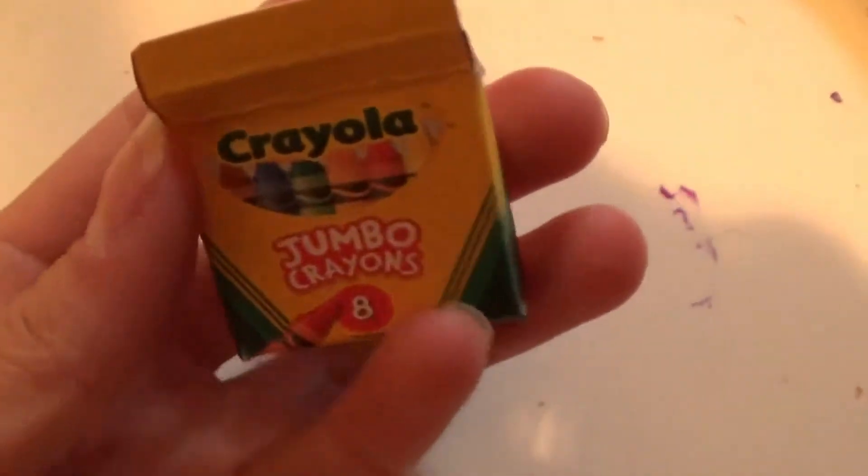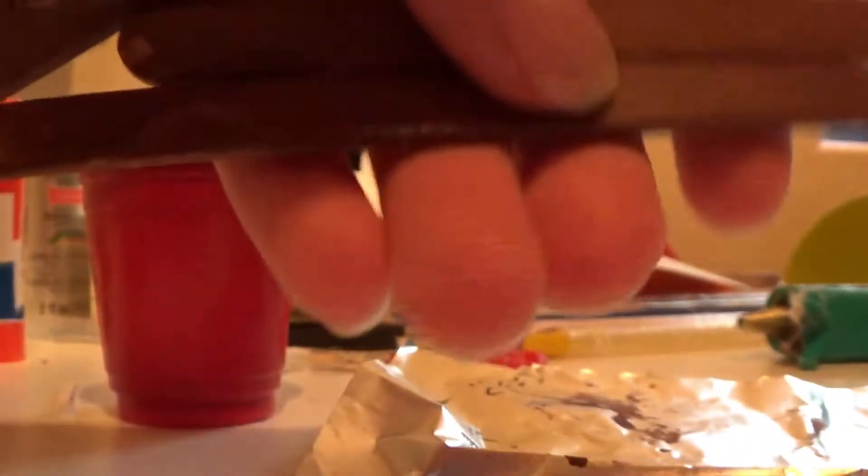Okay, so I just made this crayon box, and it has all the crayons that I just made inside of it. All my little sticks are done, and now I can make the easel.